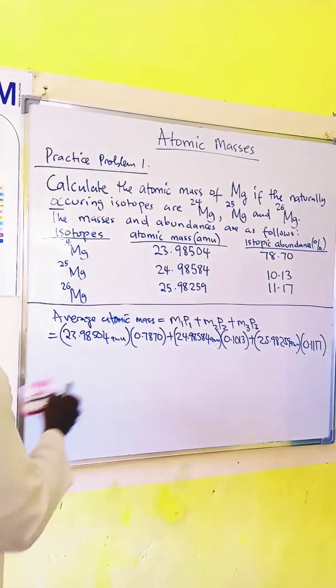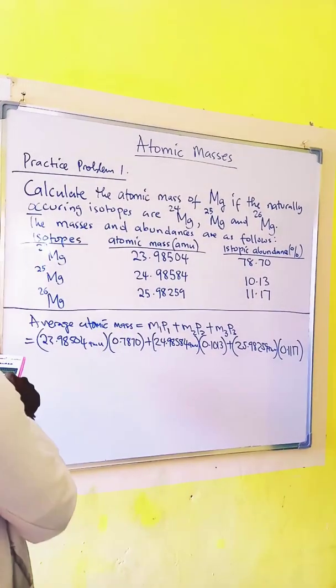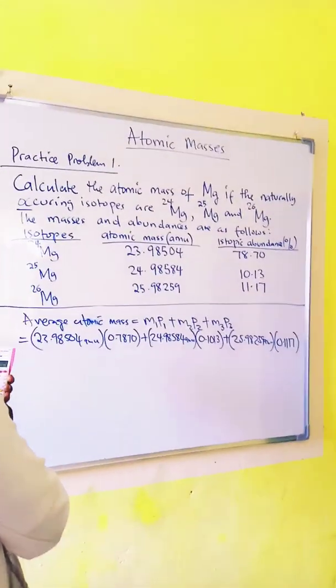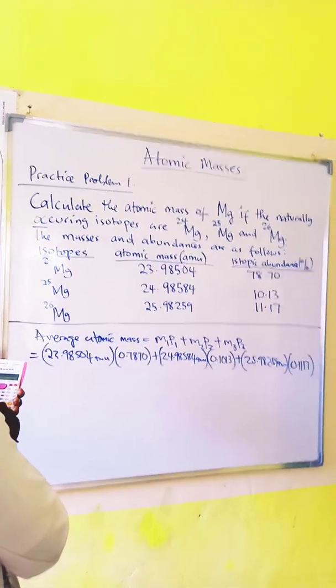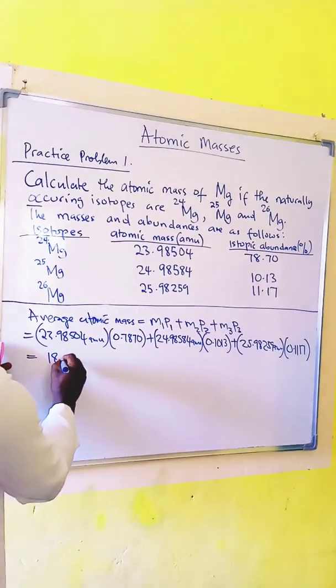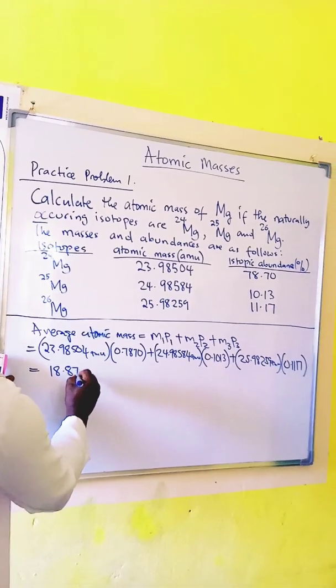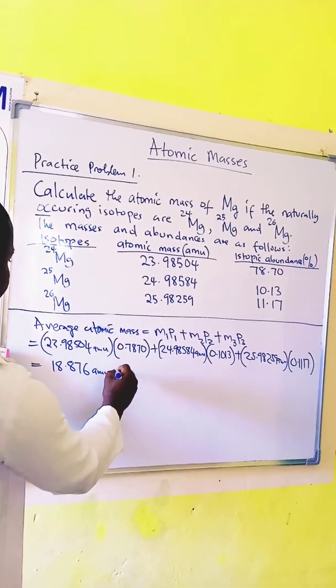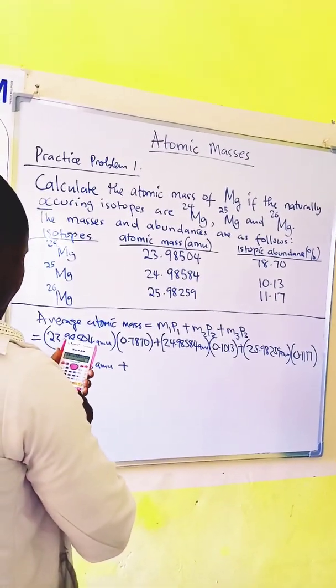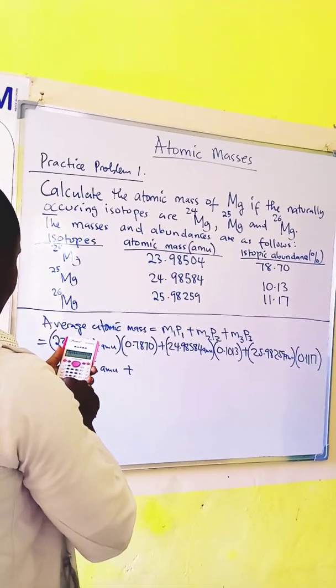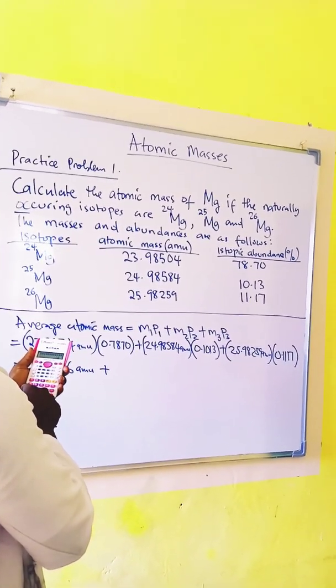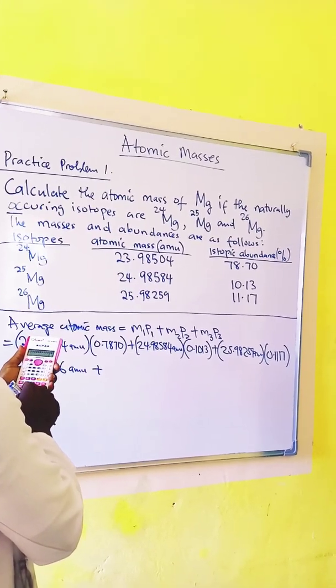Now we multiply one by one. So 23.9850 times 0.787 gives us 18.876 amu. And 24.9858 times 0.1013.